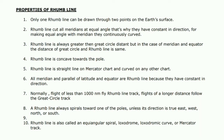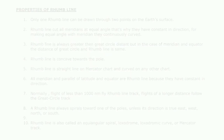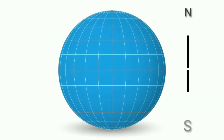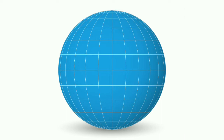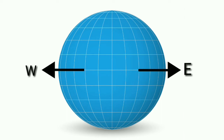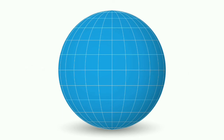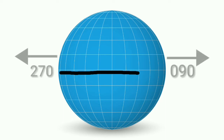Point number five — a rhumb line is a straight line on a Mercator chart and a curve on any other chart. We will discuss the Mercator chart in the next video or next chapter. Point number six — all meridians, parallels of latitude, and the equator are rhumb lines because they have a constant direction. Meridians have a constant direction of either north or south; parallels of latitude have a constant direction of 090 or 270, that is east or west; and the equator also has a constant direction of either 090 or 270.